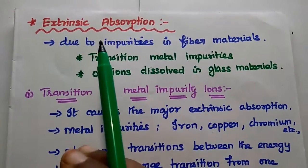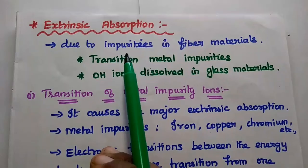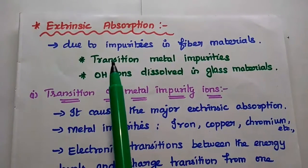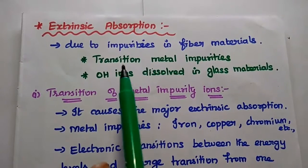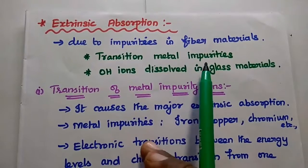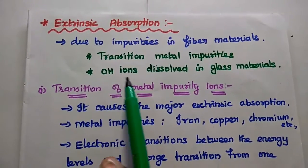Next one is extrinsic absorption. Extrinsic represents the impurities in the fiber materials. There are two kinds of impurities: one is transition metal impurities, the next one is OH ions.